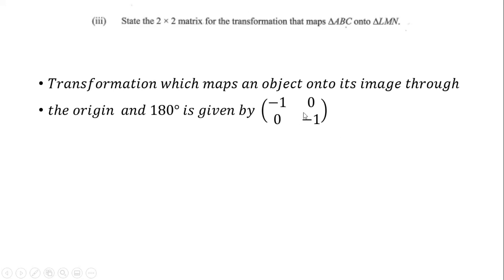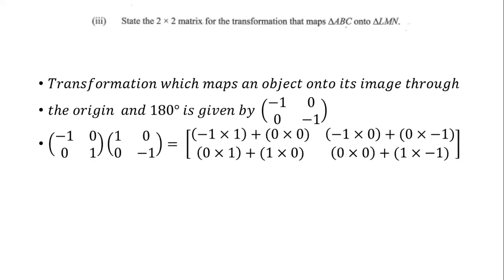This can also be proved by multiplying the two individual reflection matrices. For reflection in the x-axis, x stays the same so the matrix has 1 in the x position, while y is multiplied by −1. For reflection in the y-axis, y stays the same (−1) and x is multiplied by −1, giving a positive 1 in the x position. Multiplying these two matrices together confirms the combined transformation.